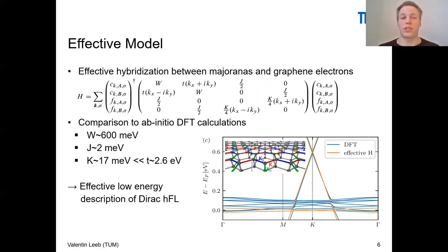The result that we found here for this heterostructure is, in fact, a much more generic result. It's actually an effective low energy description for any Dirac heavy Fermi liquid. In this sense, it's very generic, and our findings are very generic.